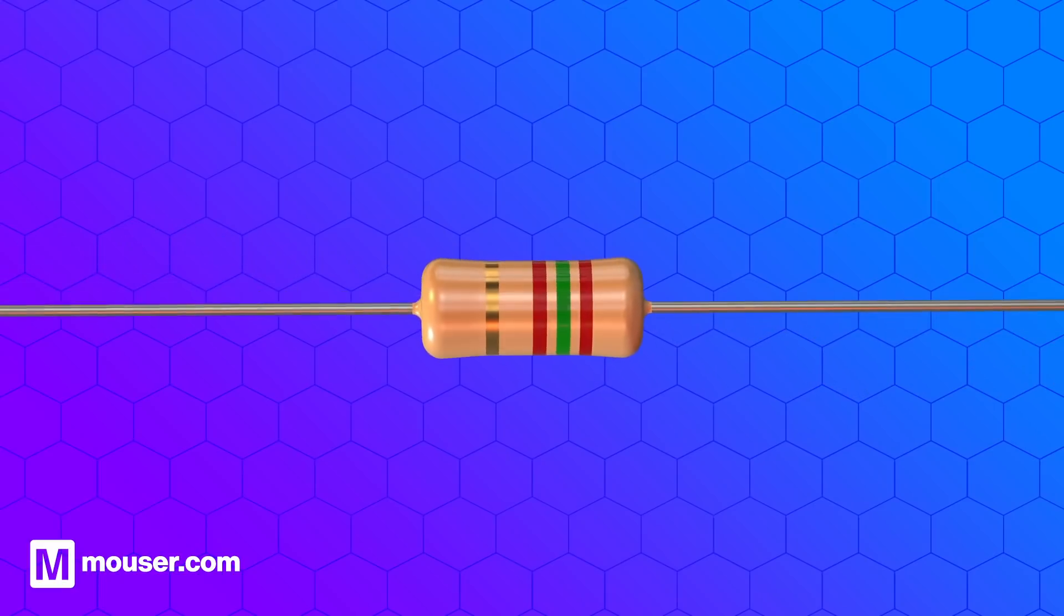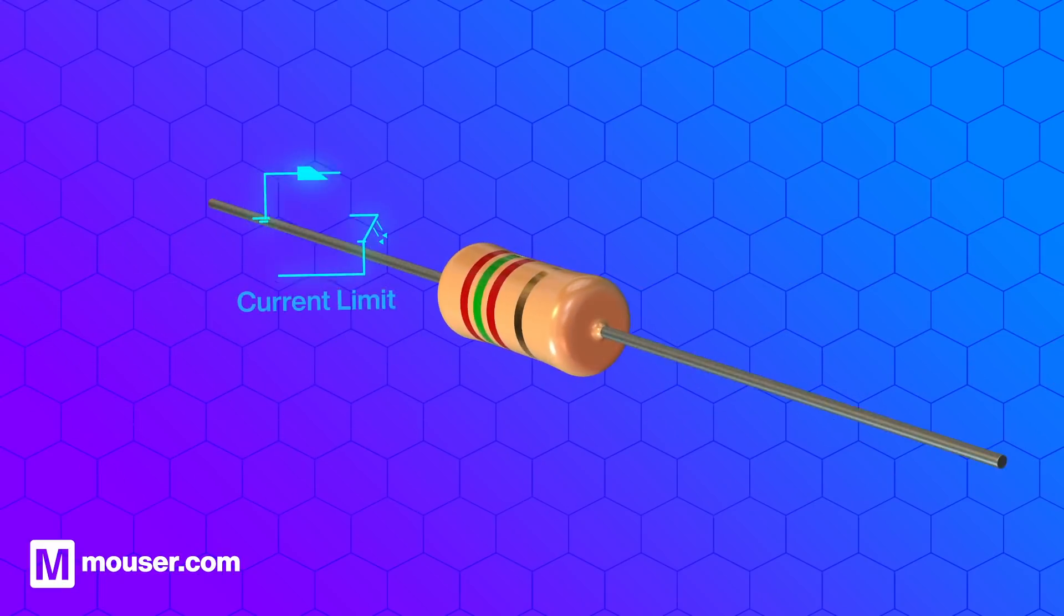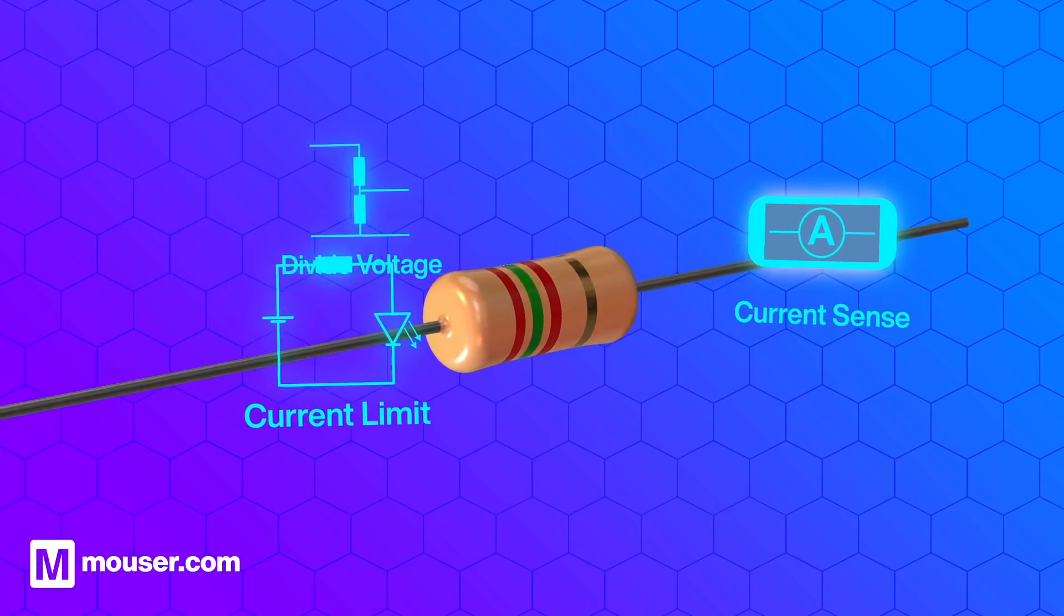Resistors are an essential building block for all electronic circuits. They are commonly used to limit current, sense current, and divide voltages.